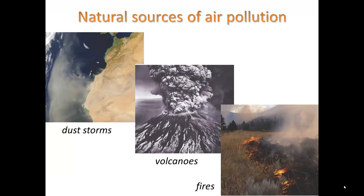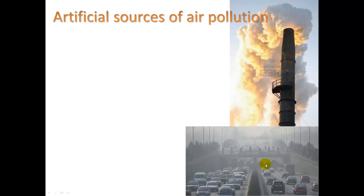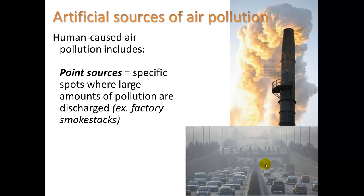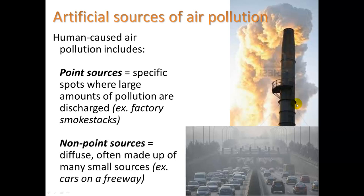There can also be natural sources of air pollution, like dust storms off the coast of Africa, volcanic eruptions, and fires. Artificial sources of air pollution are more troublesome for us. Human-caused air pollution includes point sources, which are specific spots where large amounts of pollution are discharged, such as a factory smokestack. And non-point sources, which are diffuse, often made up of many small sources, like cars on the freeway.